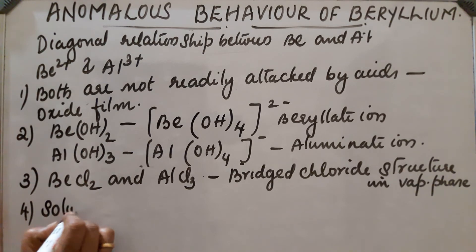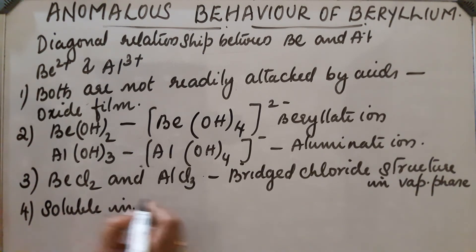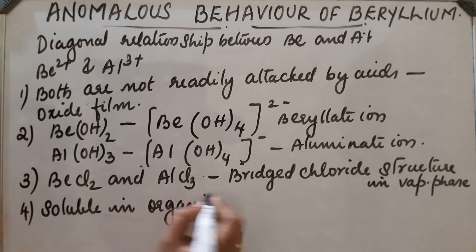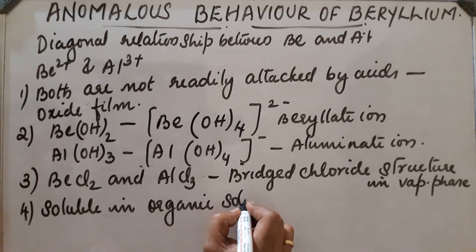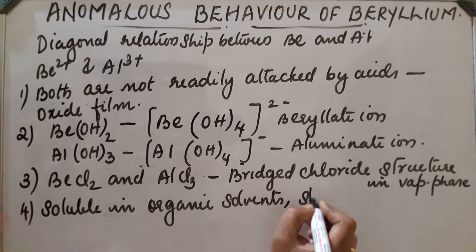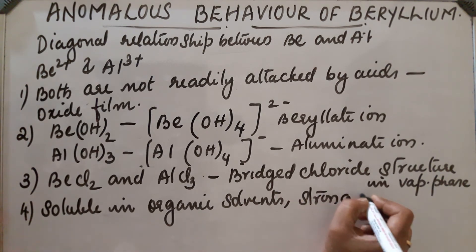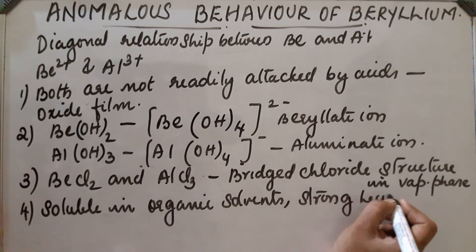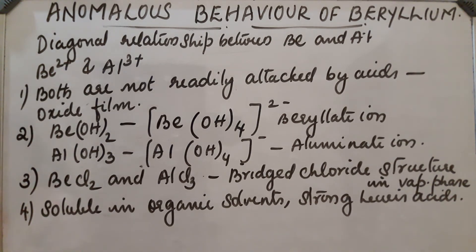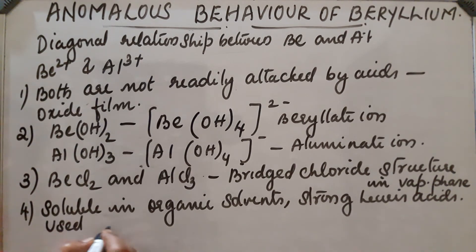These chlorides — beryllium chloride and aluminium chloride — are soluble in organic solvents, and they are strong Lewis acids. They are also used as Friedel-Crafts catalysts.